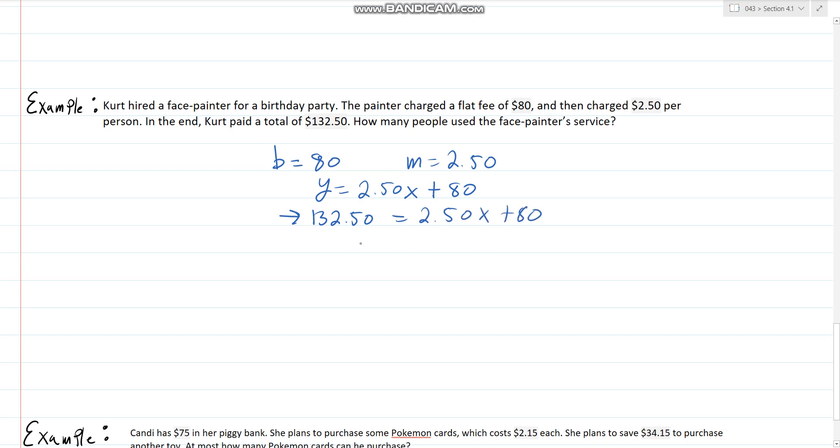We can see how many people actually did it because we know how much Kurt was charged. Now we subtract 80 on both sides. It looks like it's going to be 52.50 equals 2.5x. Divide both sides by 2.5 and we get 21 people used the service.